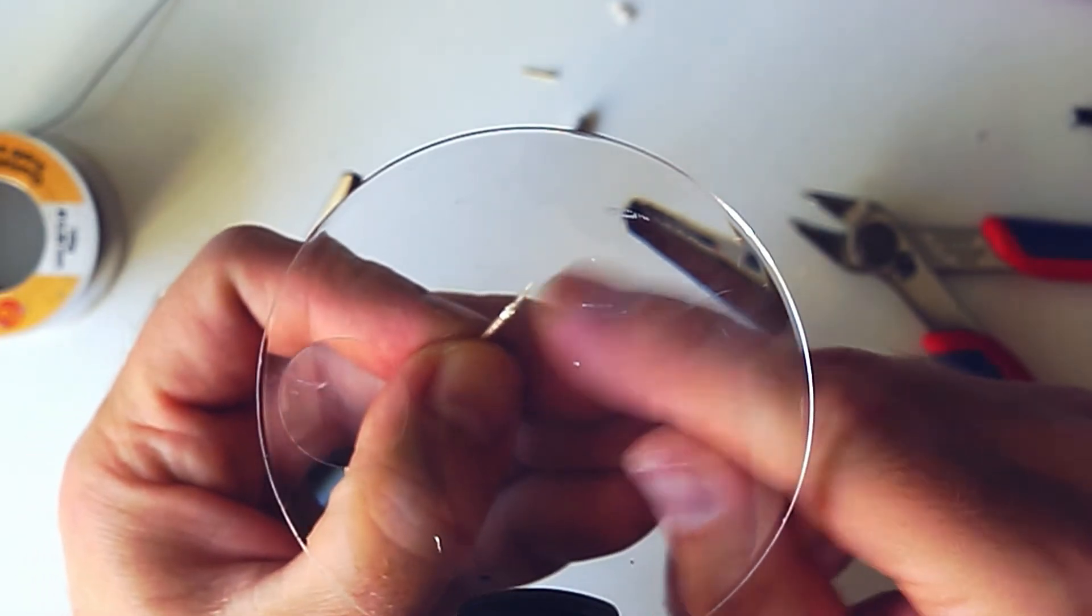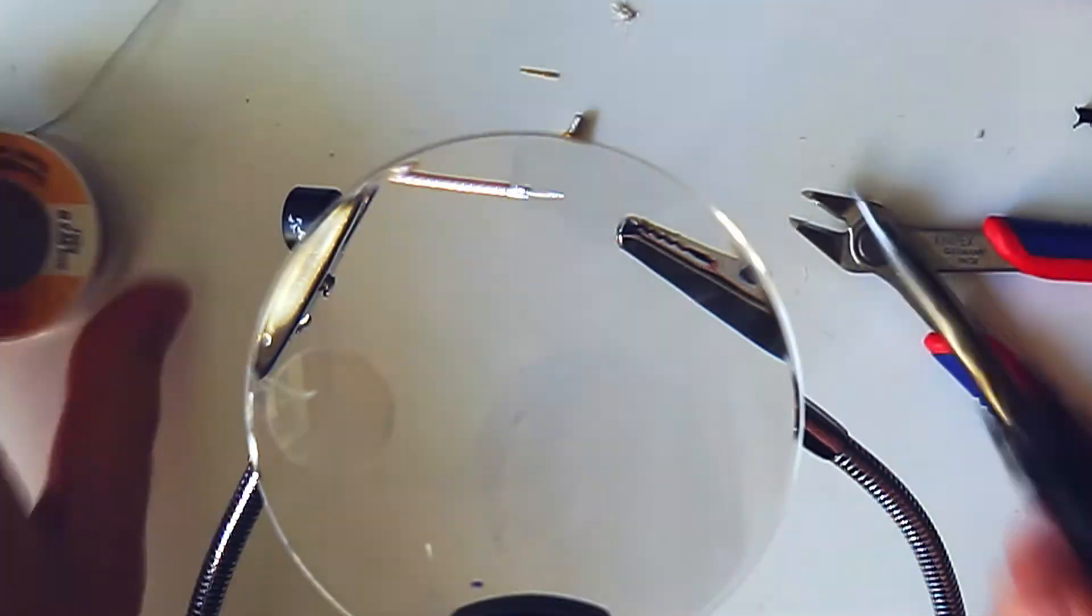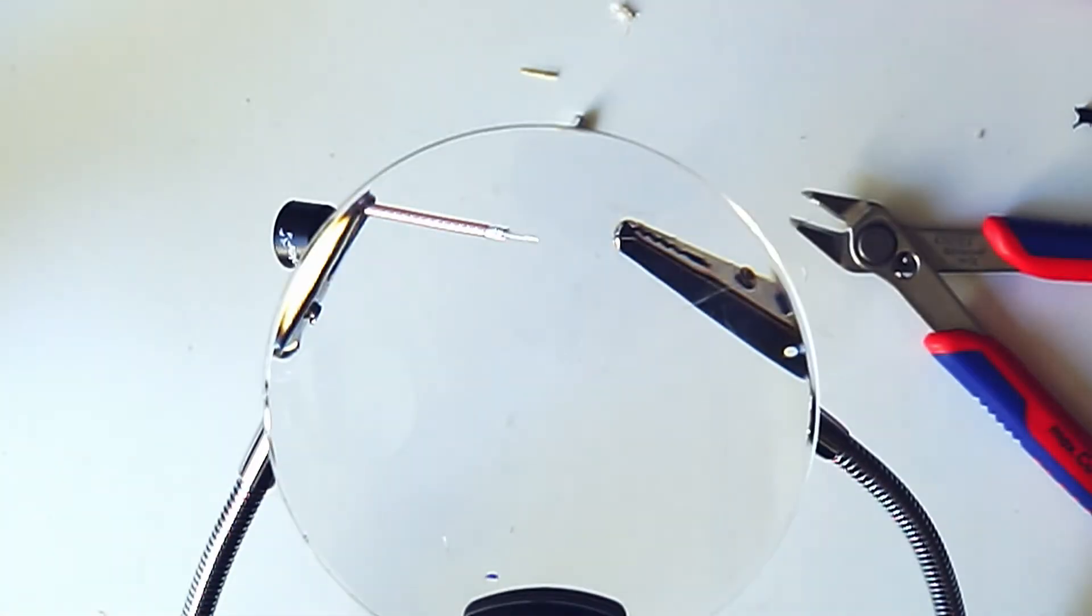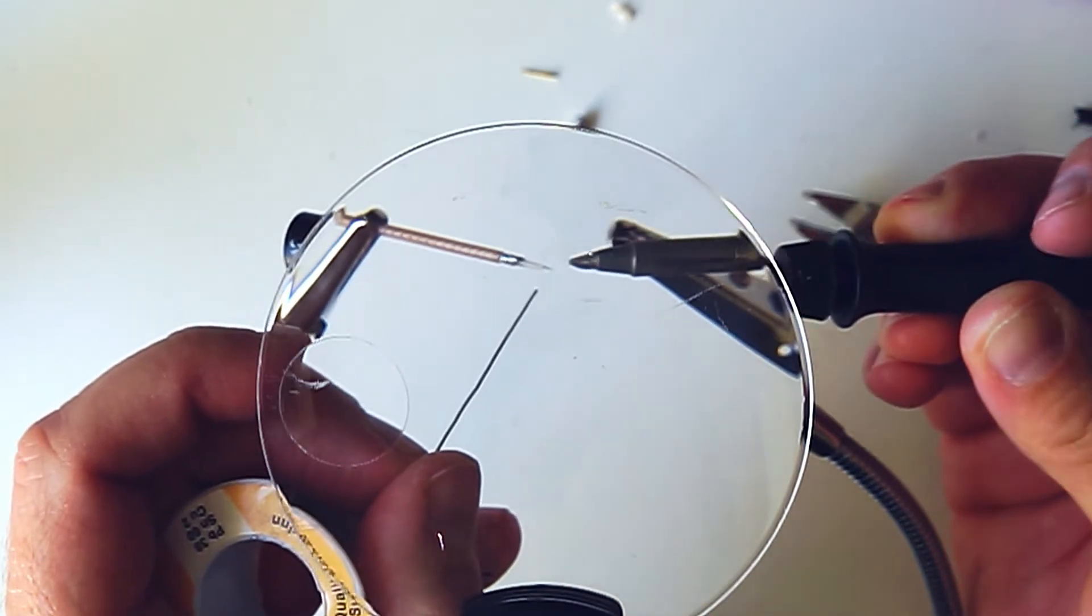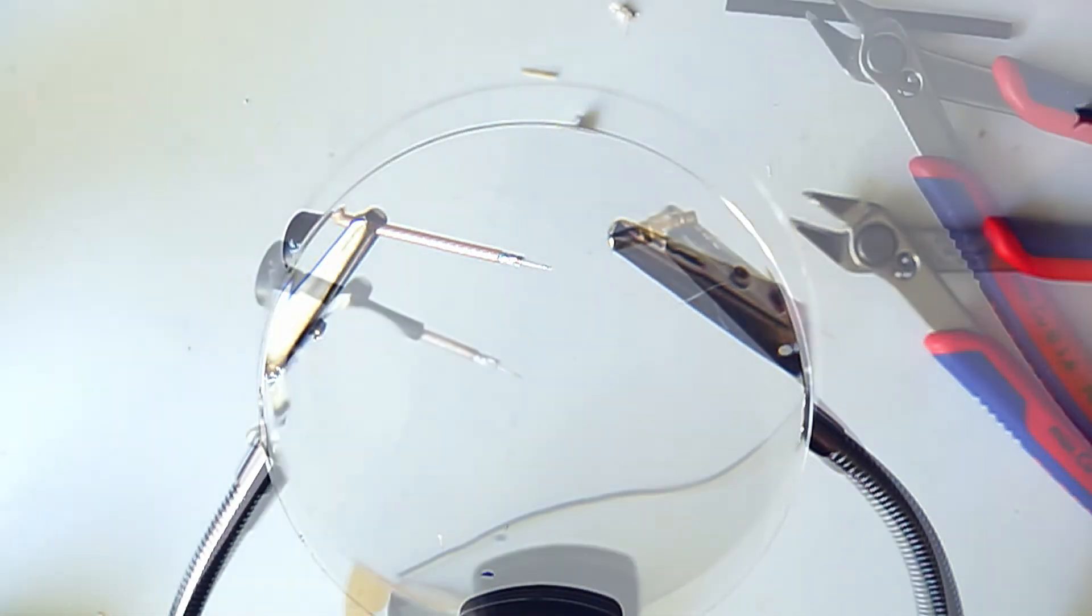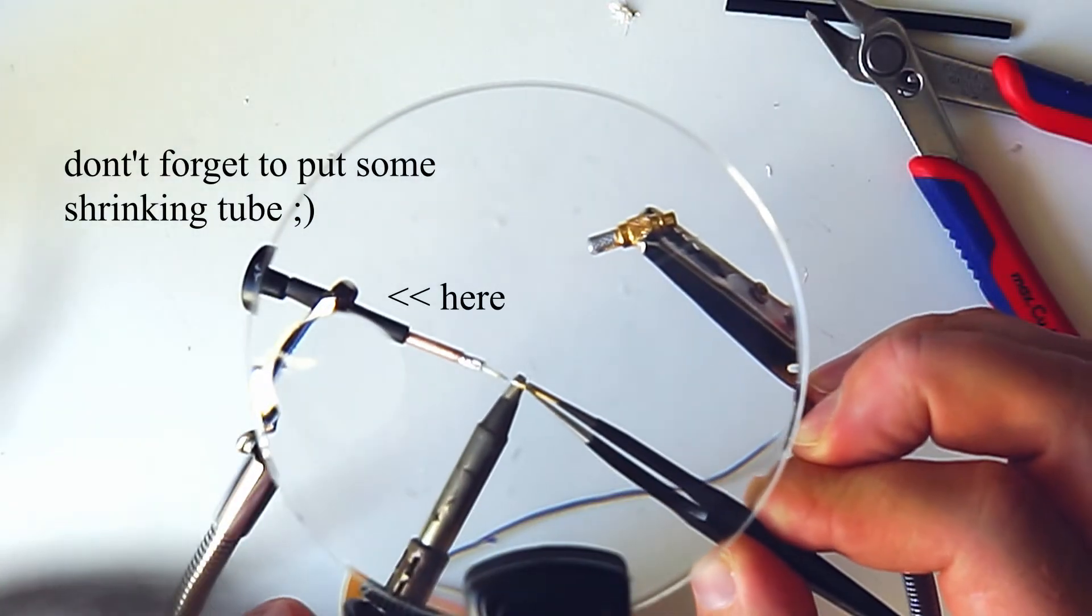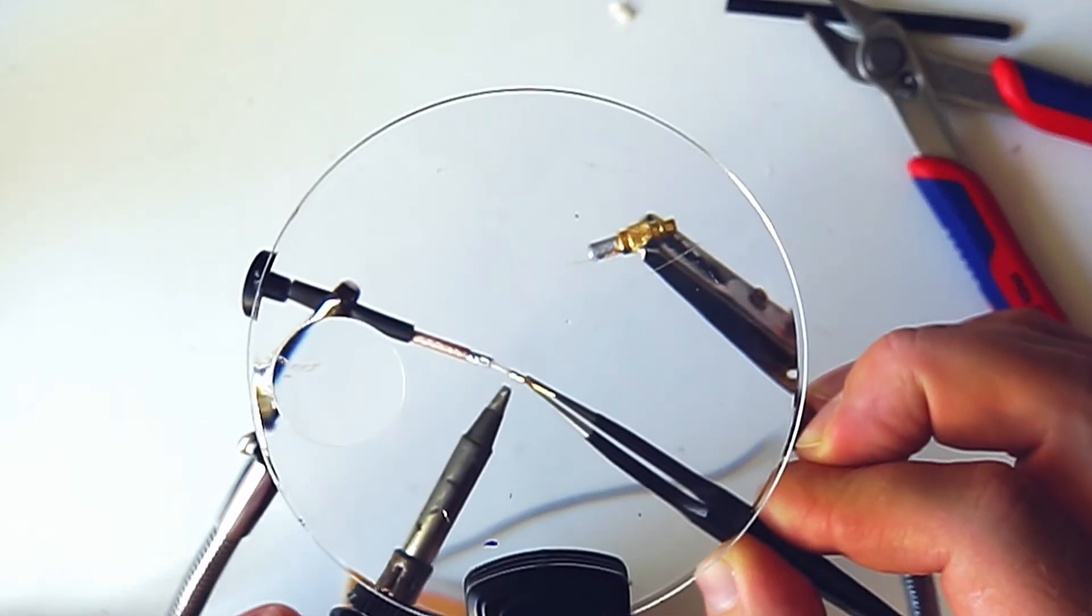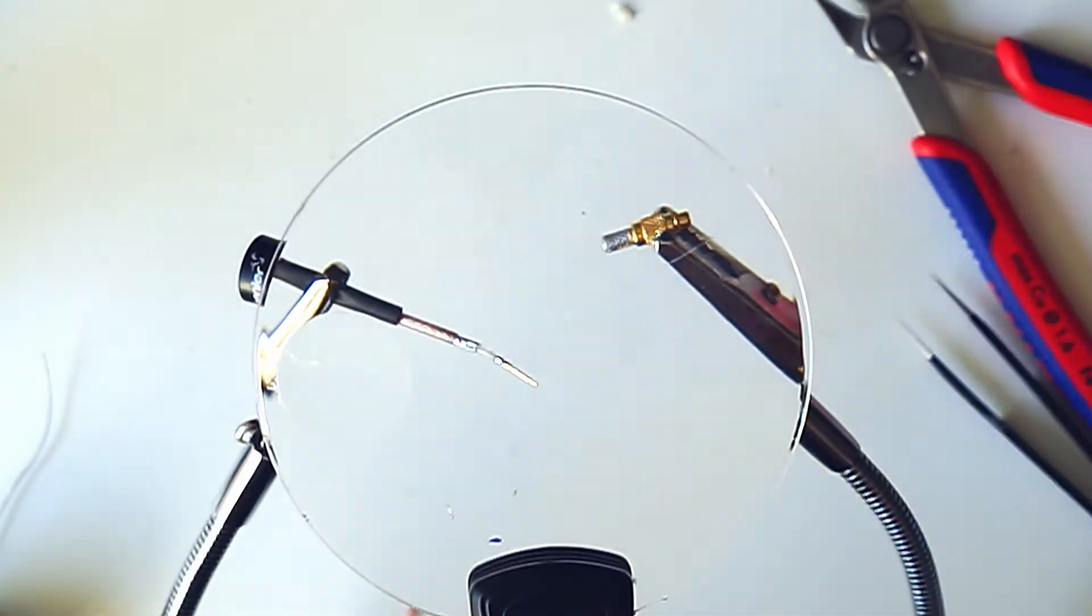So now let's put some solder on those metal parts, then it's easier to work with it and it's not doing weird stuff. This is really important now. Solder the small piece of metal, the pin, from the connector to the inner wire of the cable.